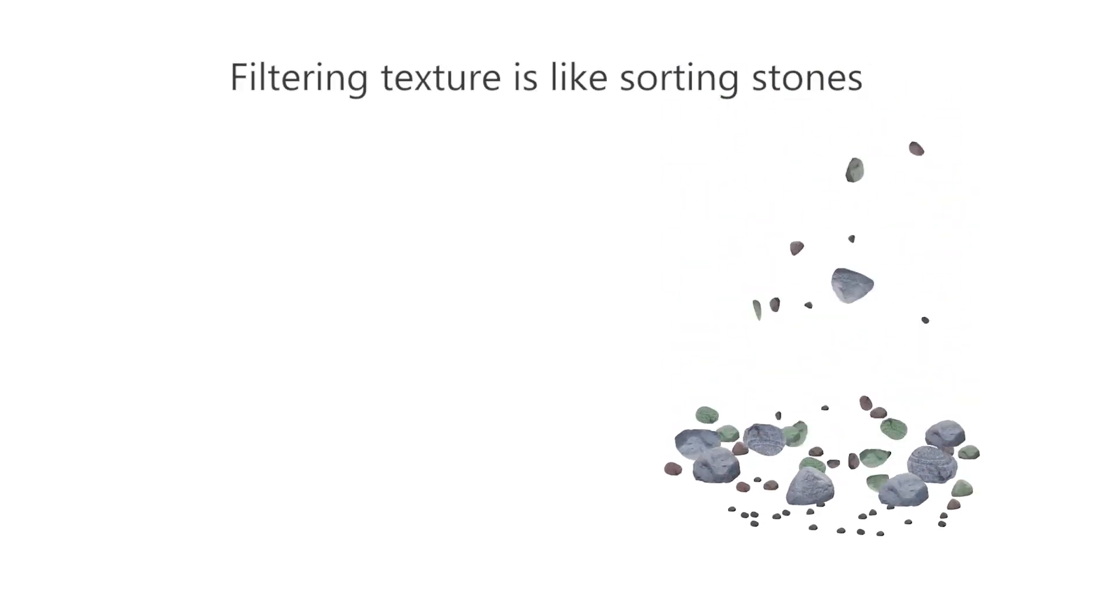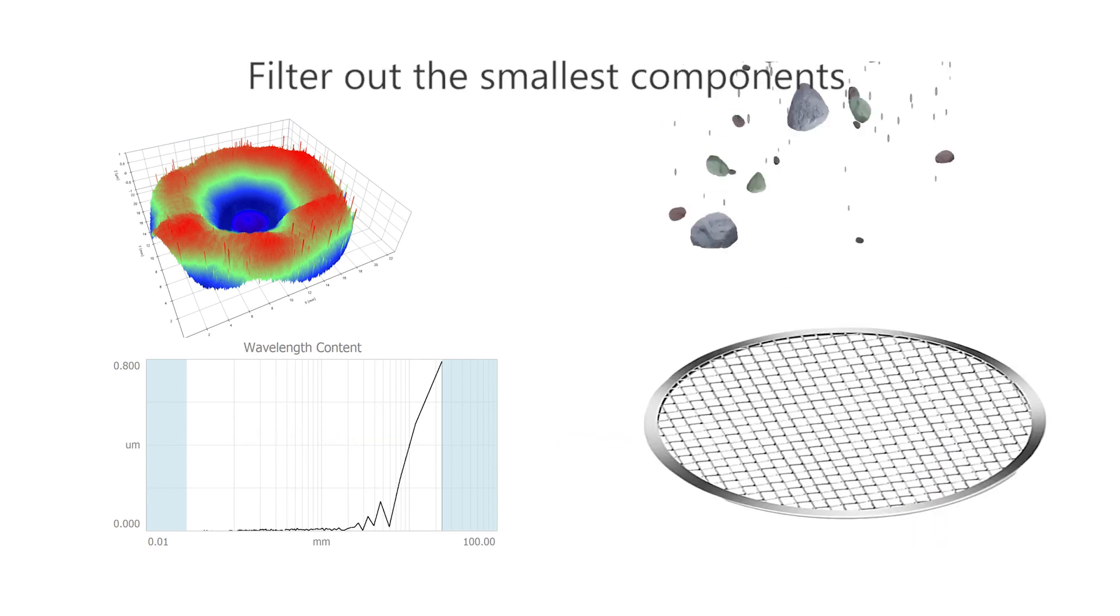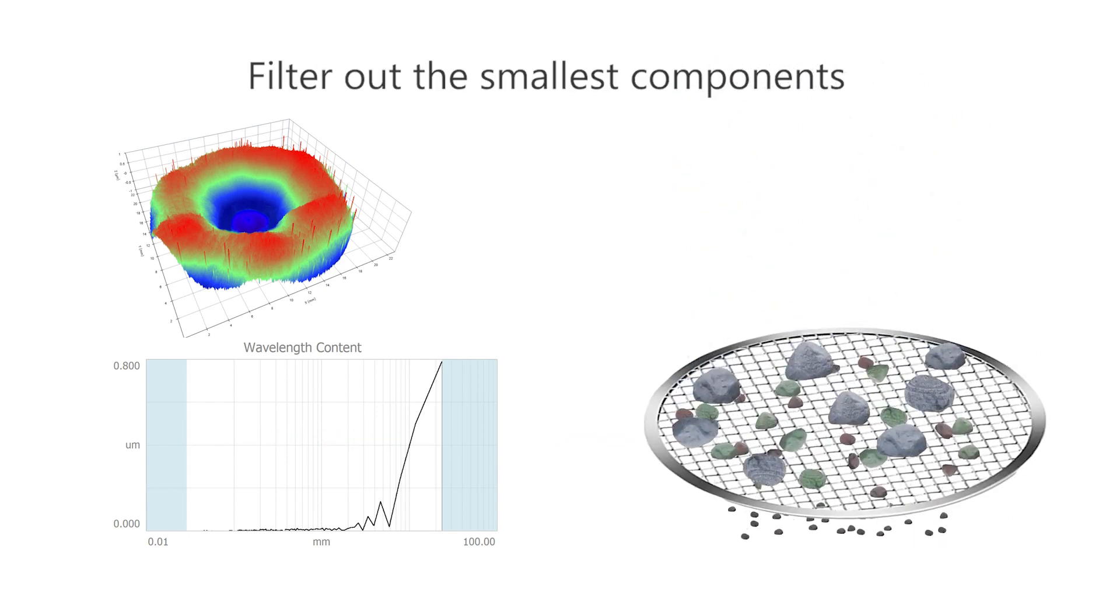One way to visualize it is to think of sorting different sized stones. The size of the stones is analogous to the size of the surface features. To get just the sizes we care about, we might start by screening out the smallest pebbles and dust.